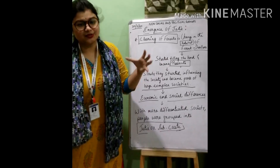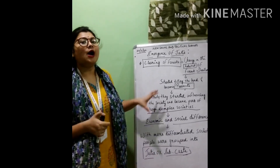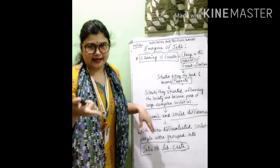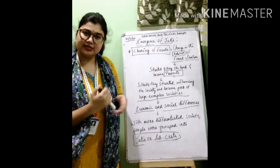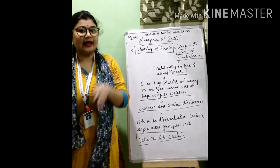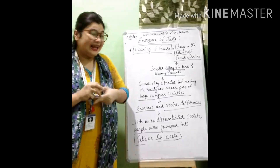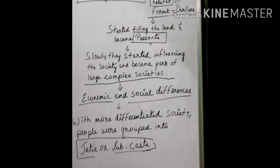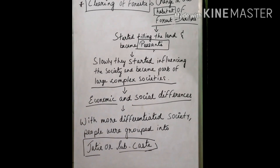This difference among people in the society on the basis of their economic and social status created jatis or subcastes. Now, in ancient Indian society, you read in class 6 about the Varna system — people were divided according to occupation into four castes: Brahmanas, Kshatriyas, Vaishyas, and Shudras. But now, with the emergence of forest dwellers becoming new peasants and divisions based on occupation and economic and social structure, people were further grouped into jatis or subcastes.